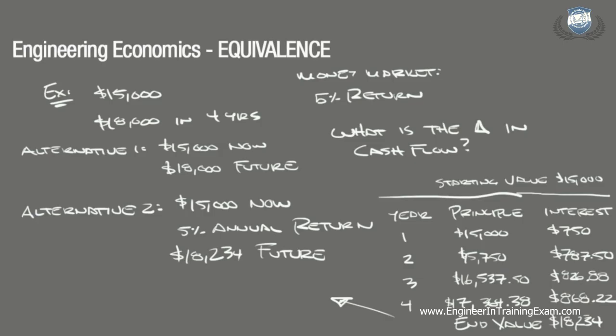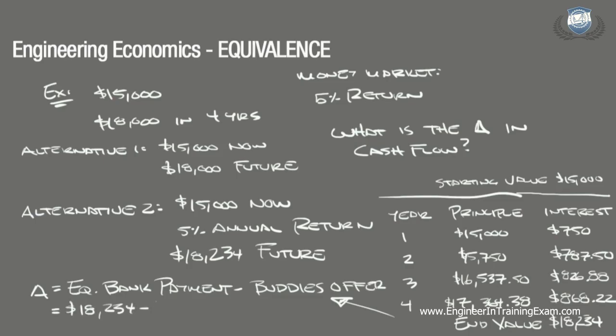Therefore, the delta between the bank payment and your buddy's offer is: delta equals the equivalent bank payment minus your buddy's offer, which is $18,234 minus $18,000, giving us a difference of $234. Comparing this equivalent payment from the bank to your buddy's offer shows that you will be losing money if you invest in your buddy's business. Therefore, you are better off investing your money in the bank.